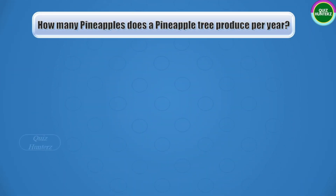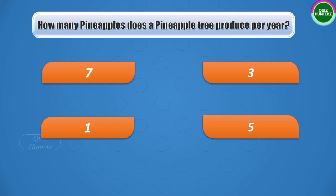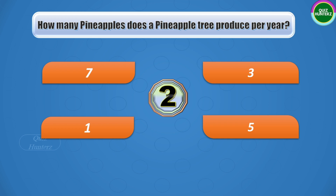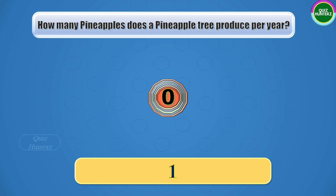Next question: how many pineapples does a pineapple plant produce per year? The options are seven, three, one, or five. Your time starts now. And the correct answer is one.